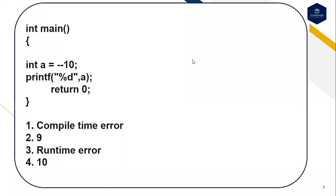This is the second question. In main, int a is equal to pre-decrement operator applied to 10, and printf is trying to print the value. The options are: first, compile time error; second, 9; third, runtime error; fourth, 10. You can pause this video and predict the output.